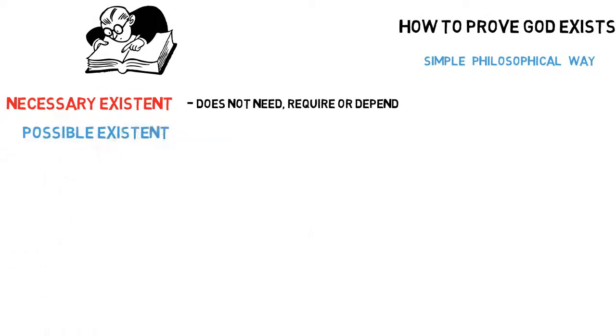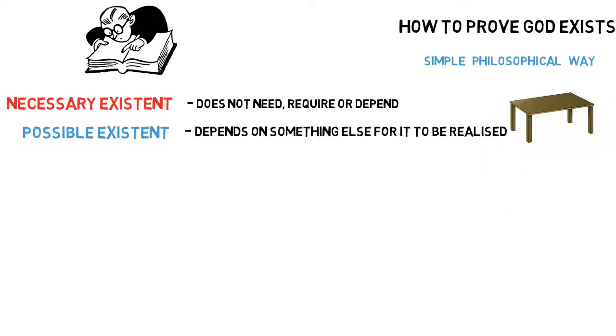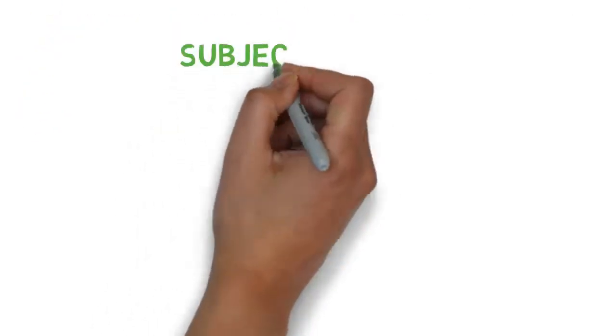A possible existent depends on something else for it to be realized. For example, this table depends upon wood and a carpenter. Let's explain further.